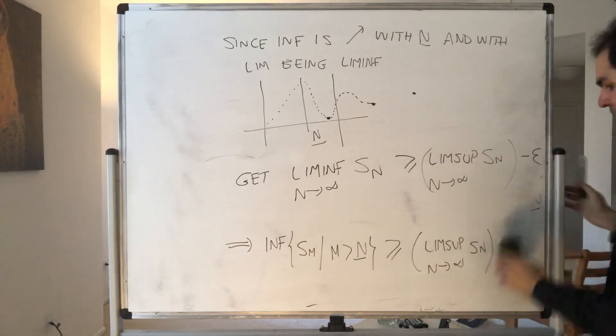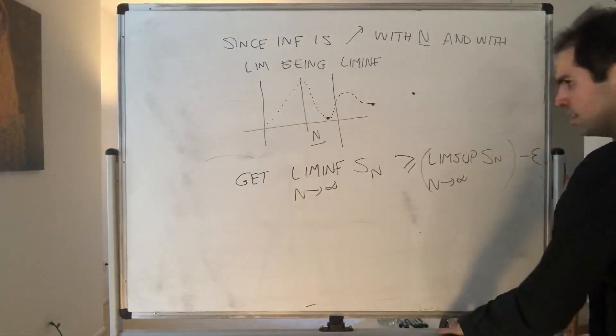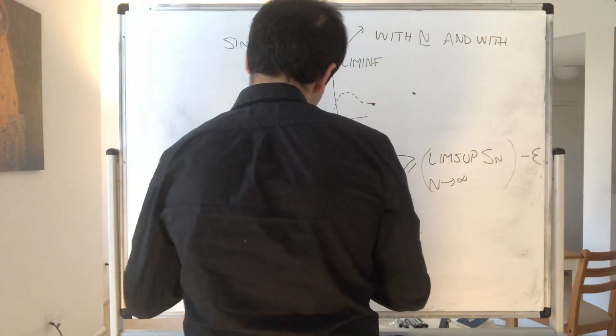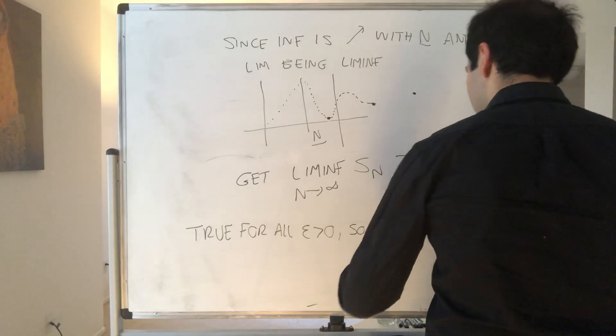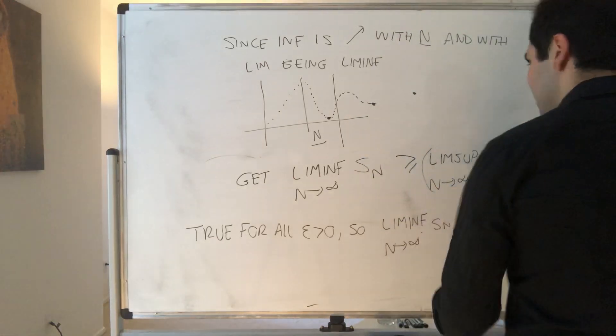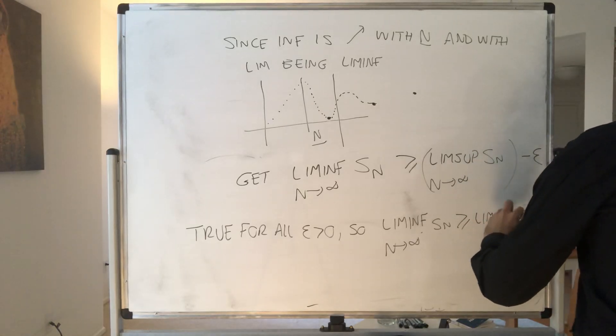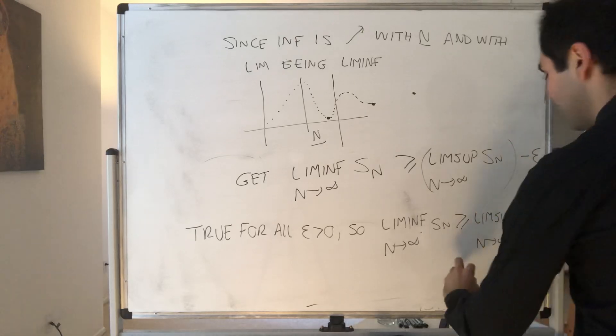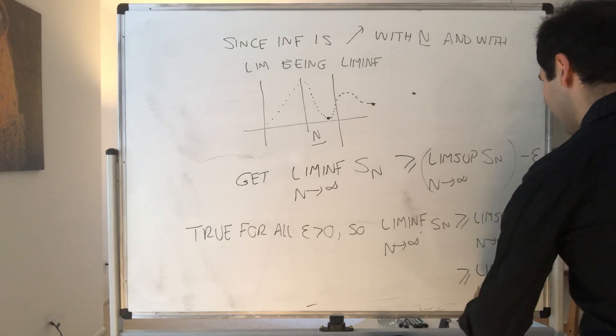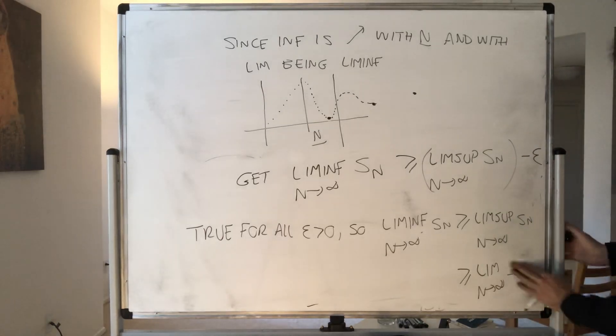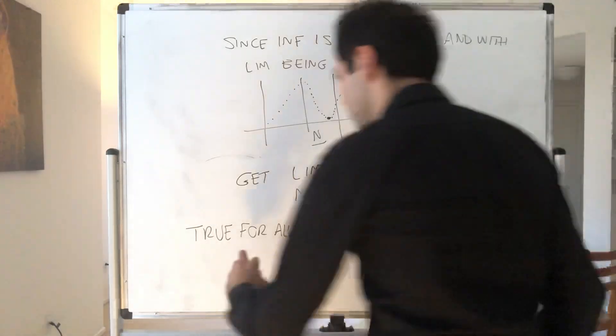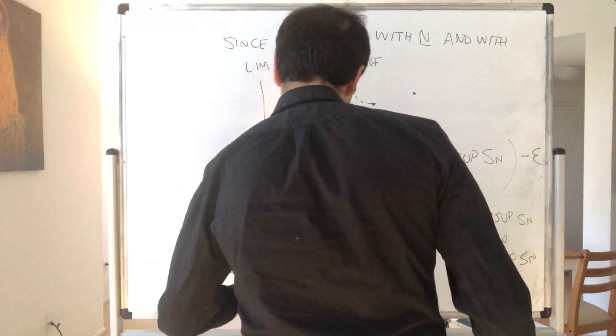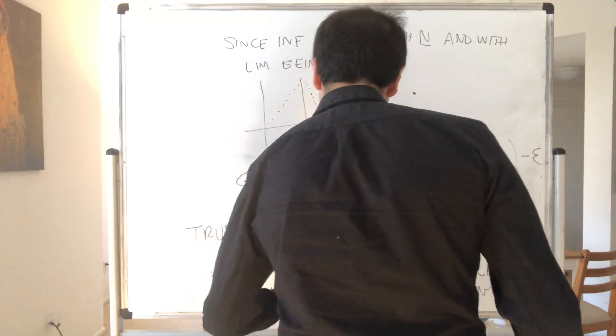But then here's the thing, this is true for all ε. And therefore, we can just get rid of this ε. So what we get in the end is that the lim inf as N goes to infinity of Sn is greater than or equal to the lim sup as N goes to infinity of Sn. But then, by definition, the lim sup is bigger than the lim inf, and therefore both of them are equal. So the lim inf equals the lim sup of Sn.